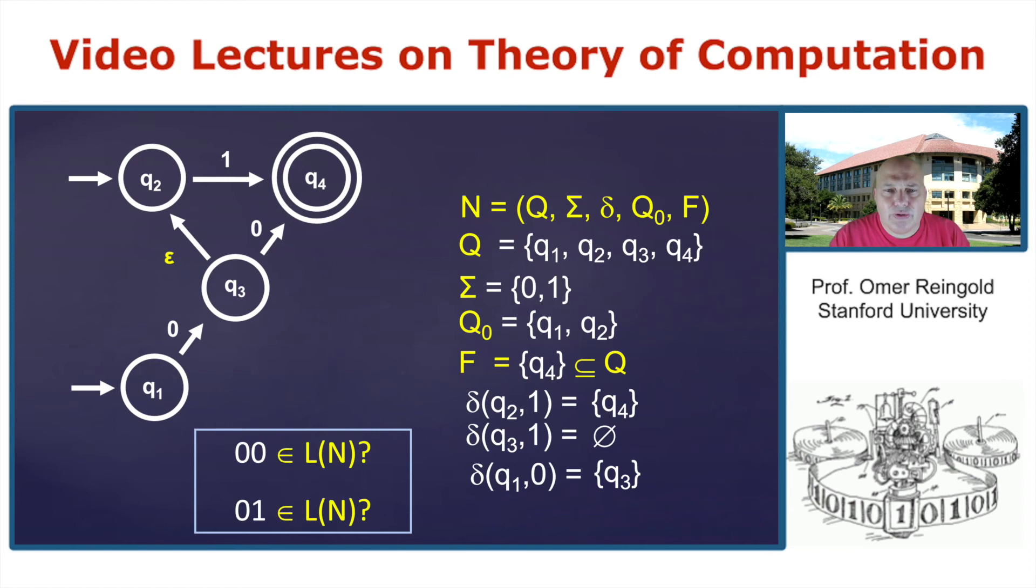So now we can ask is zero, zero in L of N? Think about it. Well, zero, zero is easily in L of N because from Q_1, you can start in Q_1, walk on zero to Q_3 and walk on zero to Q_4. How about zero, one? Well, you would still start with Q_1. You take a zero to Q_3, but now how can you take a step with one? Well, you cannot directly take a step with one, but you can first take an epsilon, make an epsilon move from Q_3 to Q_2 and now take a step with one. So both of these strings are in L of N.